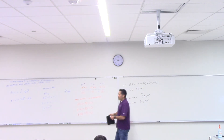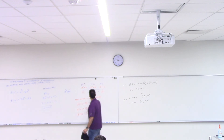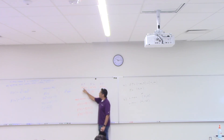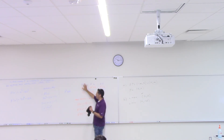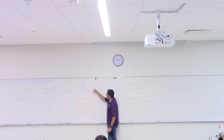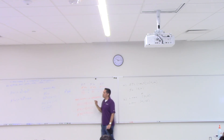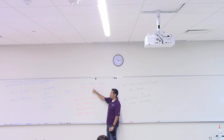Is there going to be a case where you need more than one test point per region? You only need one test point between critical numbers. The reason: if the derivative were ever positive somewhere in a region where we already found it negative, it would have to pass through zero again — giving another critical number. So we can be sure that between two critical numbers the derivative maintains the same sign. Only one test point is needed per region.